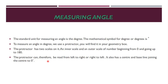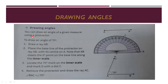The protractor can be read from left to right or right to left. It also has a center and a baseline joining the center to zero degrees. Now about drawing angles — you can draw an angle of a given measurement using a protractor. It has an inner scale from 0 to 180 degrees and an outer scale also from 0 to 180 degrees, with a base and a center marked.